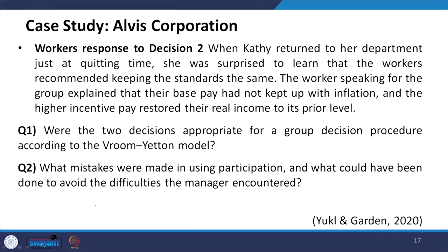The question arises: were these two decisions appropriate for a group decision procedure according to the Vroom-Yetton model? This is your assignment. What mistakes were made in using participation, and what could have been done to avoid the difficulties the manager encountered? Since the workers provided no solution and left it to Kathy, the participation process was not fruitful.